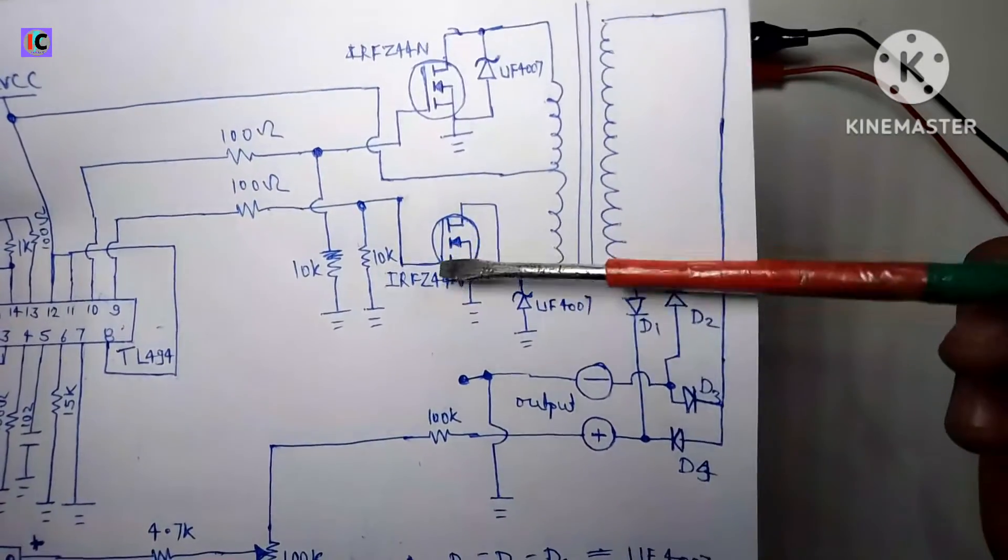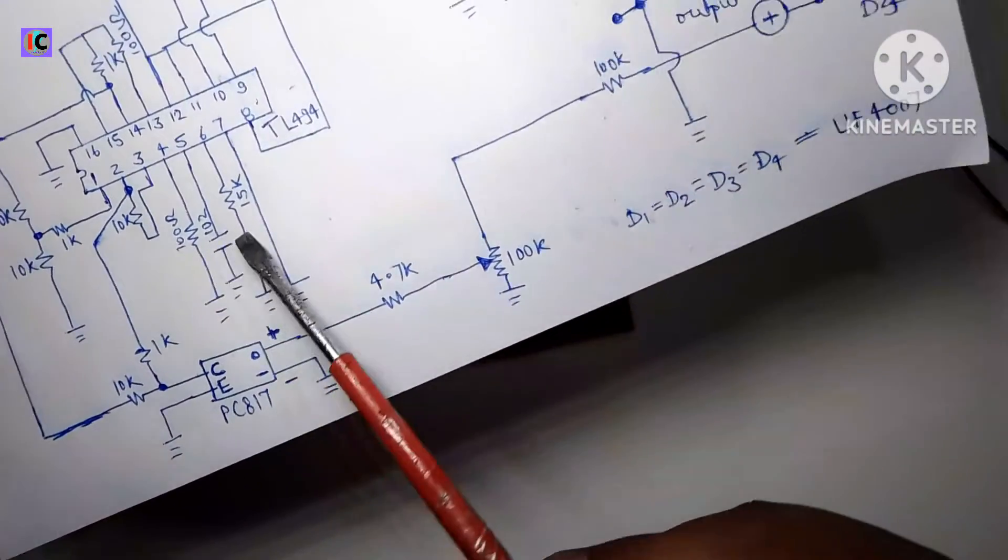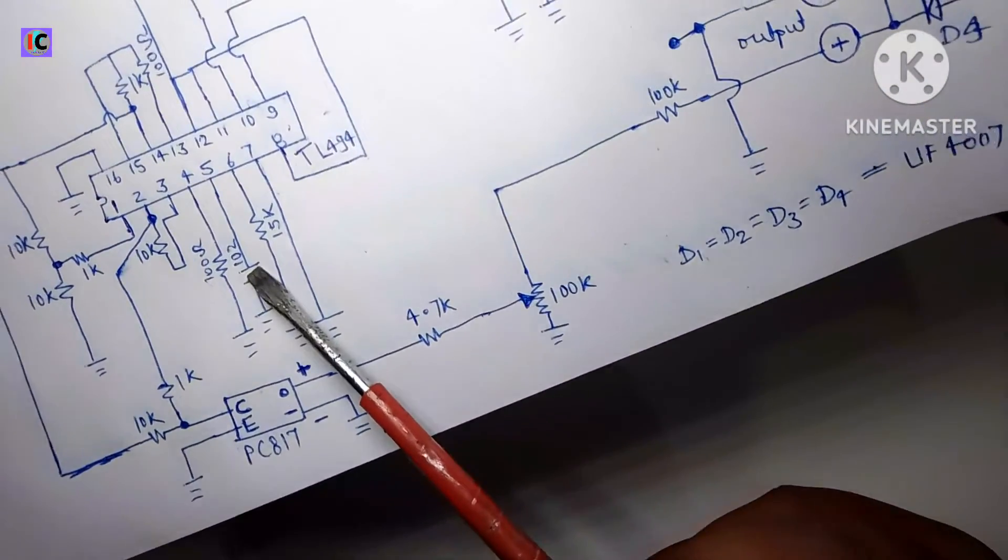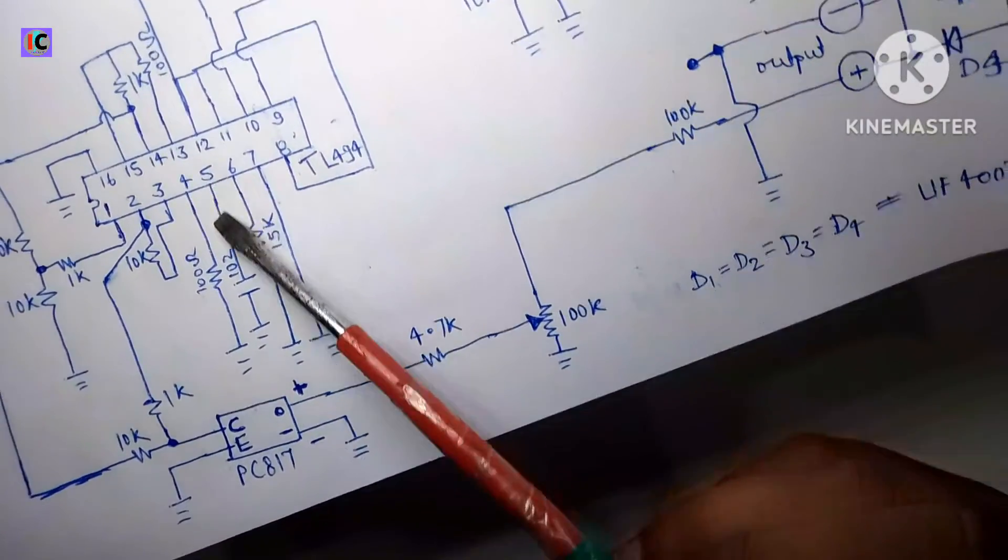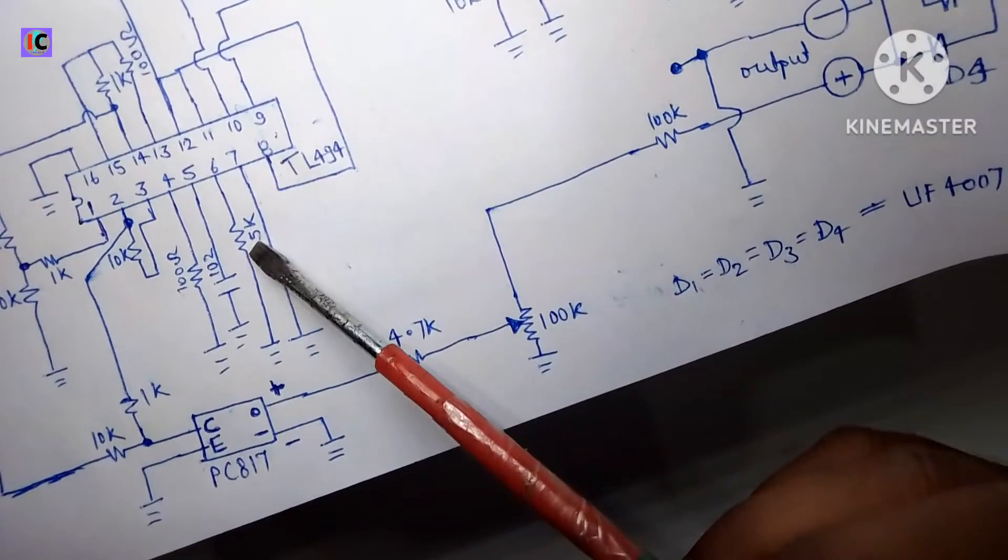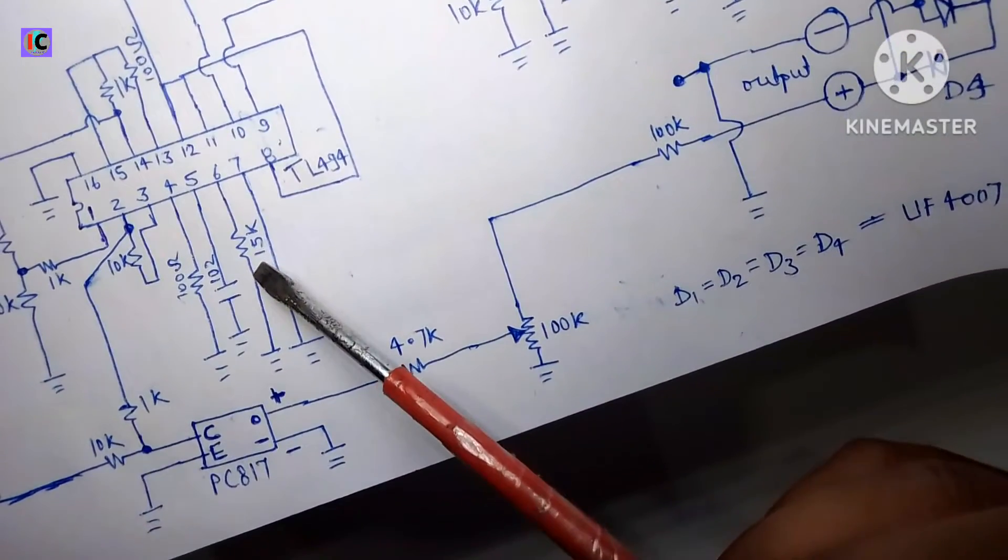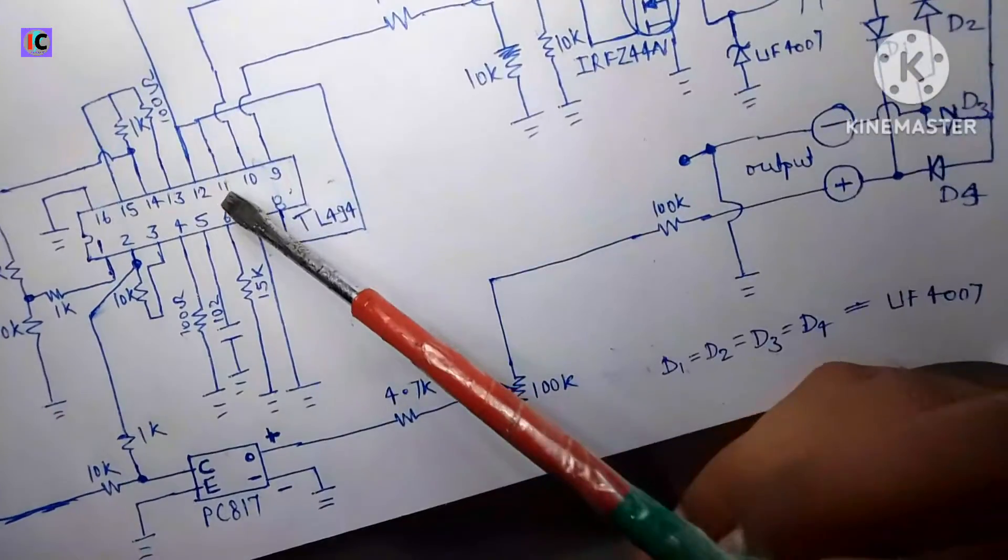the other is on. And here also a 10 nanofarad capacitor is connected from CT pin which is pin number five and ground. And pin number five and six is connected through 15 kilo ohm resistor and ground which makes the oscillation of this IC.